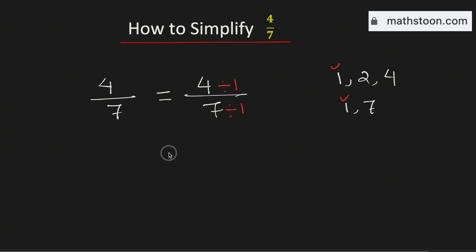As a result, we will get 4 over 7. It means the fraction 4 over 7 is already simplified. And this is our final answer.